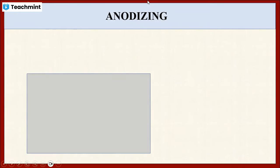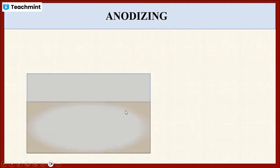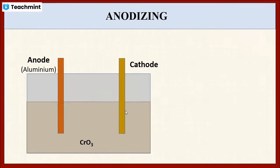The anodizing process is carried out in a plating bar, which is a type of glass vessel. This bar contains chromic acid or sulfuric acid solution as the electrolyte, and two metal strips are immersed in the solution — one aluminum rod acting as the anode, and one iron or copper rod acting as the cathode.